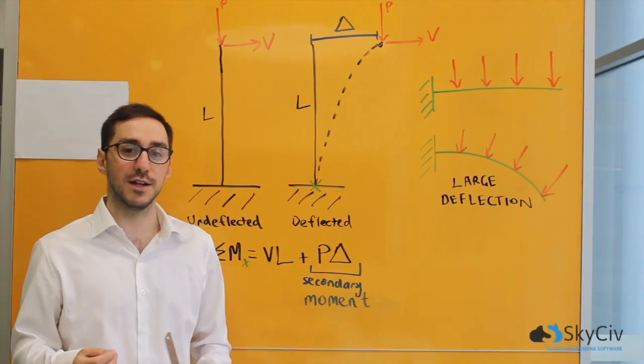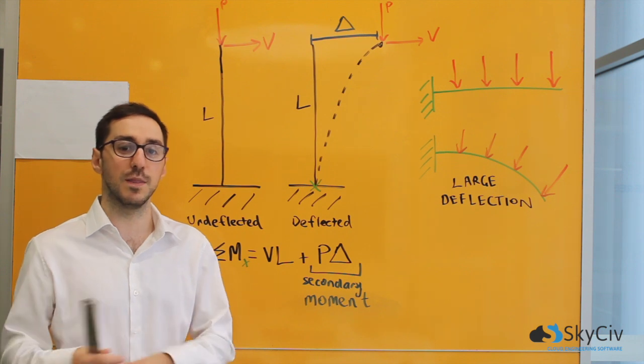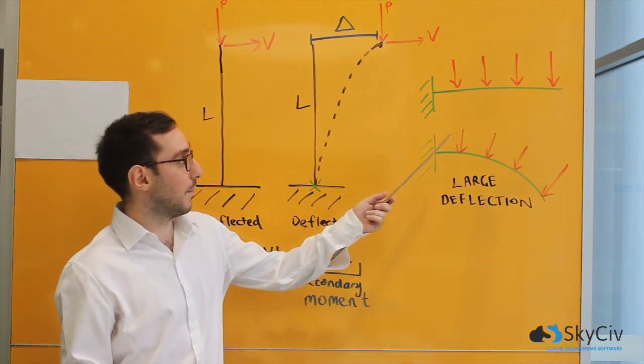A P-delta analysis is different from a linear static analysis because it's used when there's larger deflections. If we look at this diagram of this beam...